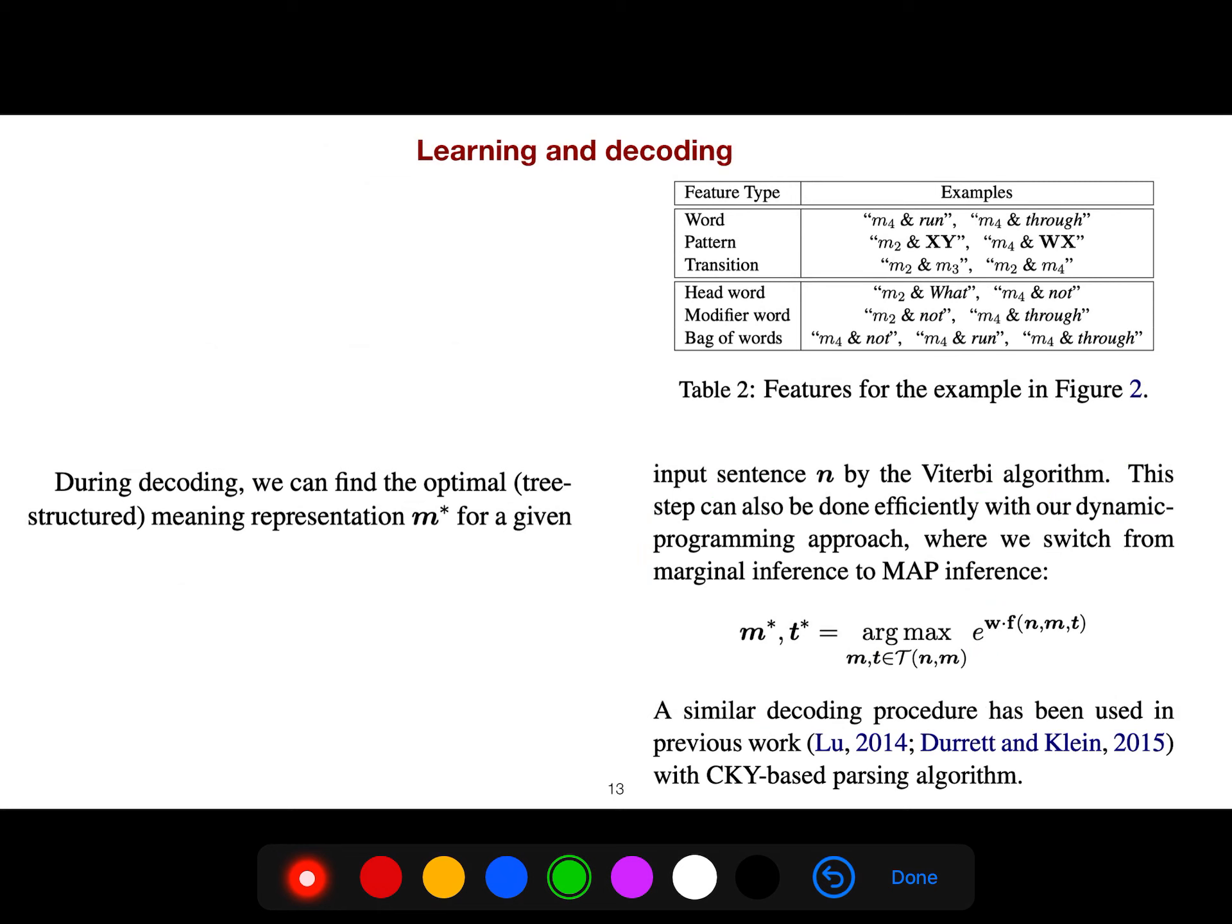We can find the optimal meaning representation for a given sentence by the Viterbi algorithm. I'll explain the Viterbi algorithm in my playlist for conditional random field and also for hidden Markov model. We switch from marginal inference to maximum posterior inference. A similar decoding has been used for CKY. I've explained CKY algorithm in my playlist for probabilistic context-free grammar.